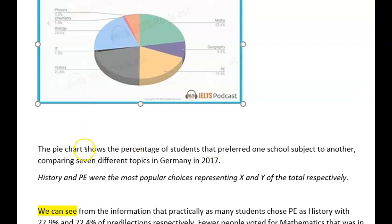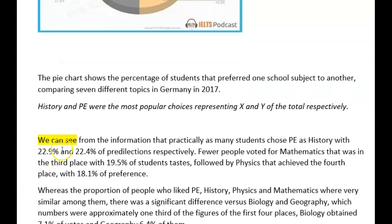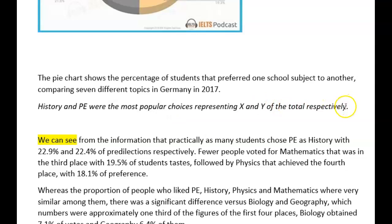So this one, let's kick off. This is a pie chart. You've said this pie chart shows the percentage of students that prefer one school subject to another, comparing seven different topics in Germany, and actually it is 2018. Don't worry too much, but make sure you get that right in the exam. You've started off with 'we can see' — I think this should be more impersonal. Remember it's academic, so avoid 'we' and 'they' and kind of too informal stuff. So I'm suggesting your first line could be: 'History and PE were the most popular choices, representing x and y of the total respectively.' So here we've got a superlative immediately — 'the most popular' — and you've also used 'respectively' and given some data there. That's quite a nice line to start with.